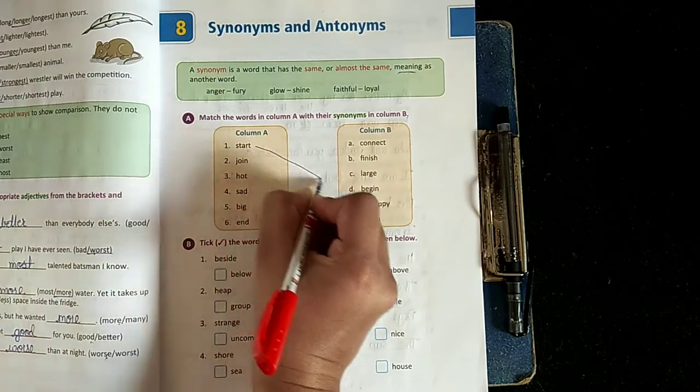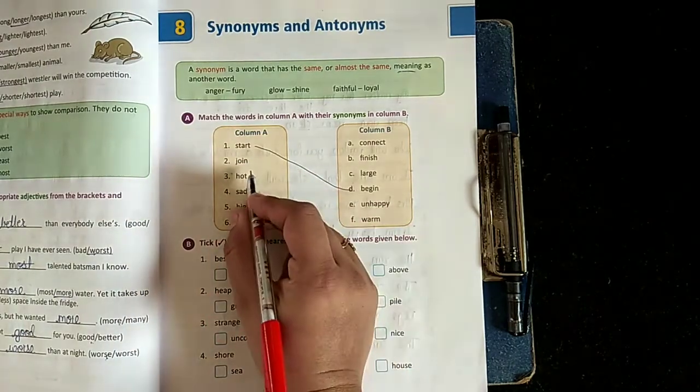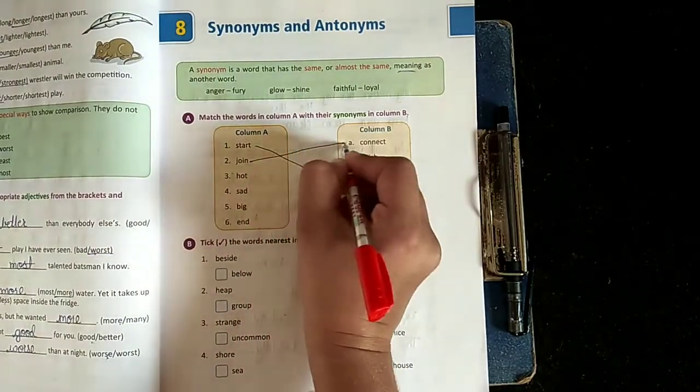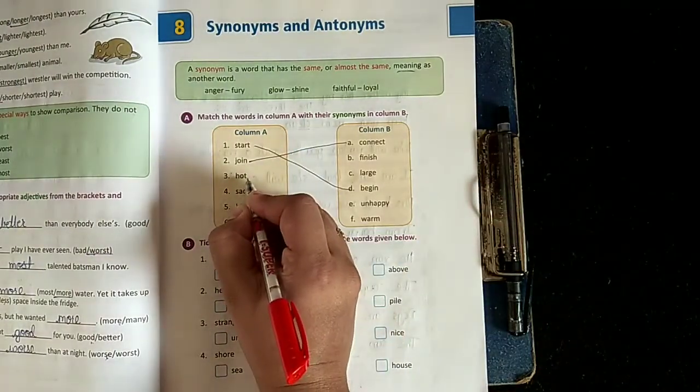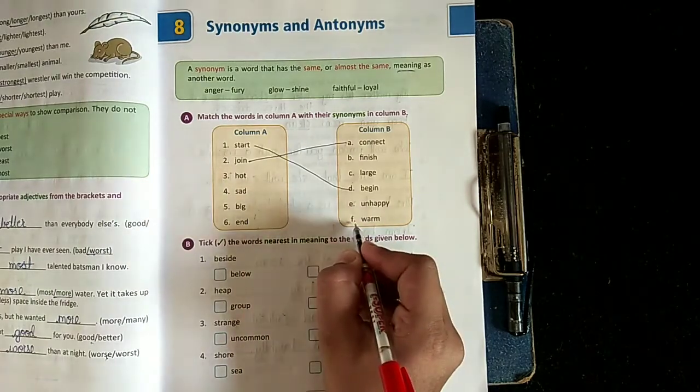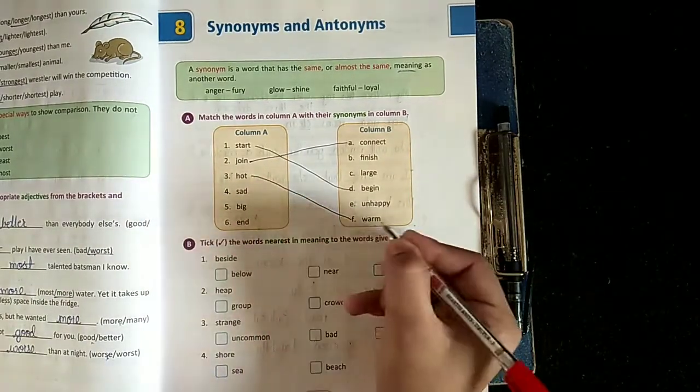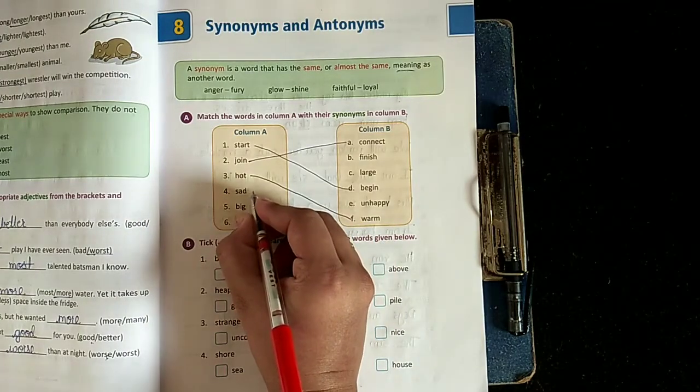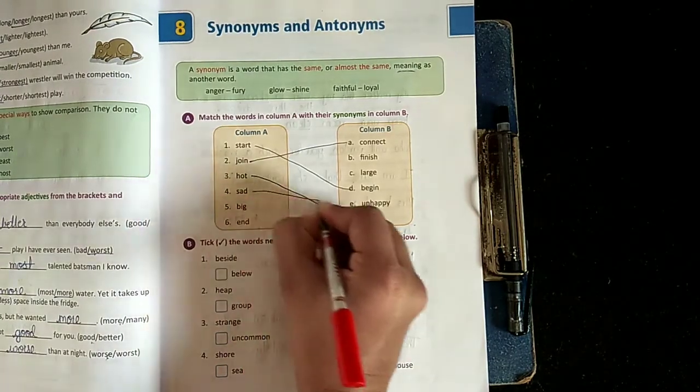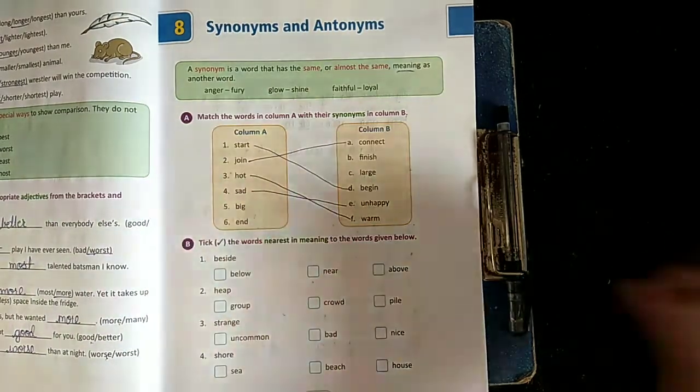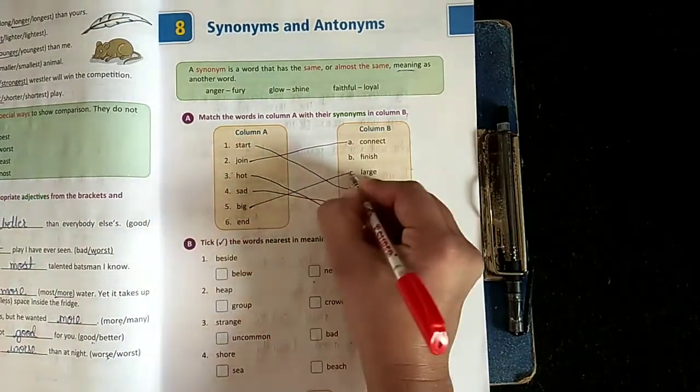Start - begin. Join means do chizo ko join karna, connect karna - join, connect. Hot means garam and warm - warm also means garam hai, right? Sad means udaas ho jana, right? Sad and unhappy. Big - kuch bada, and here large.